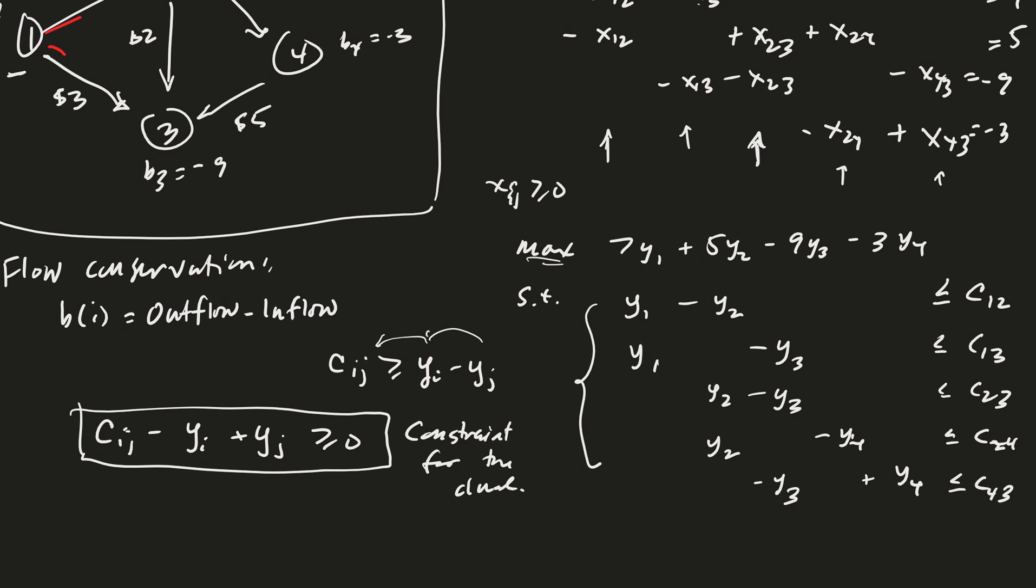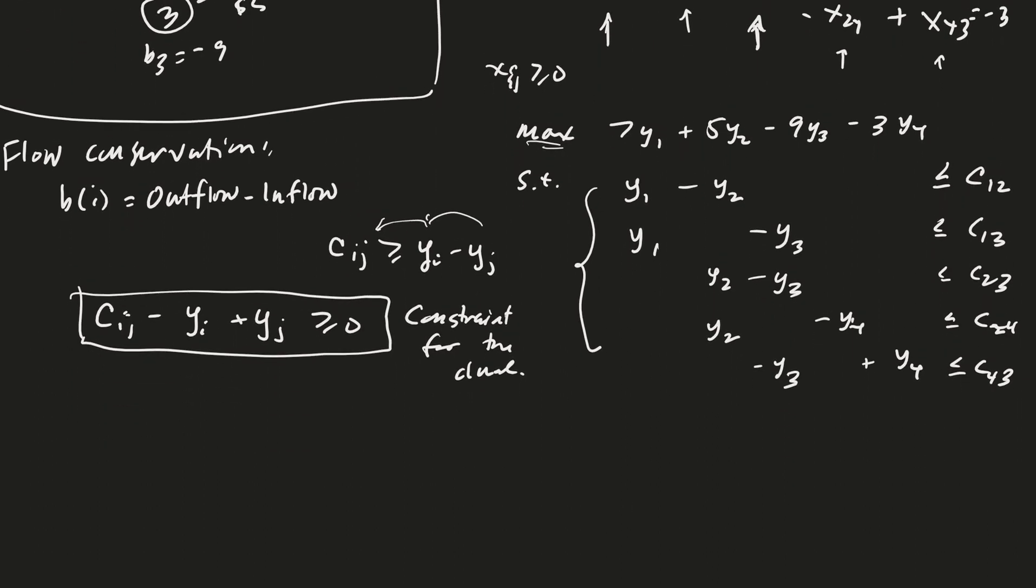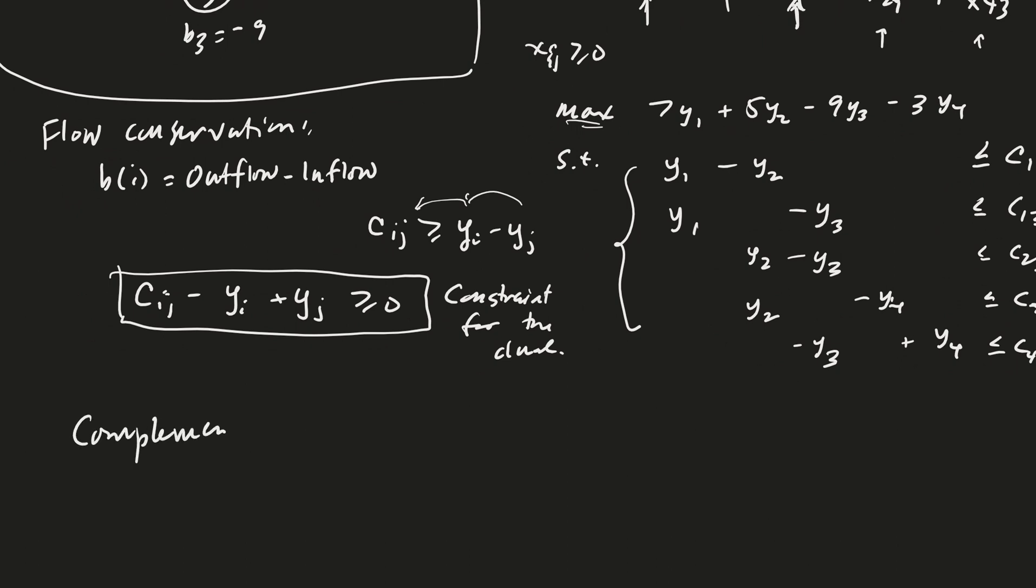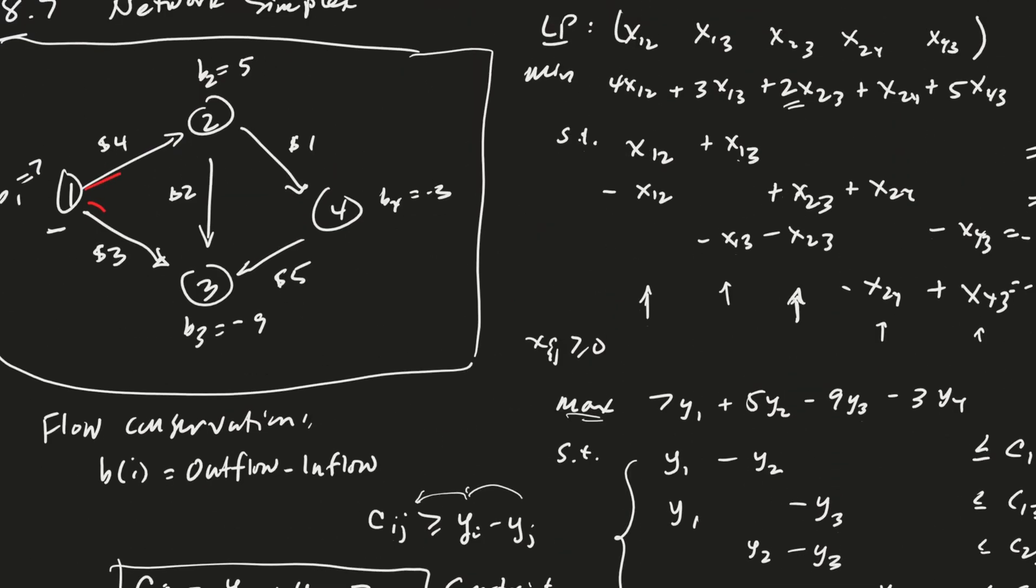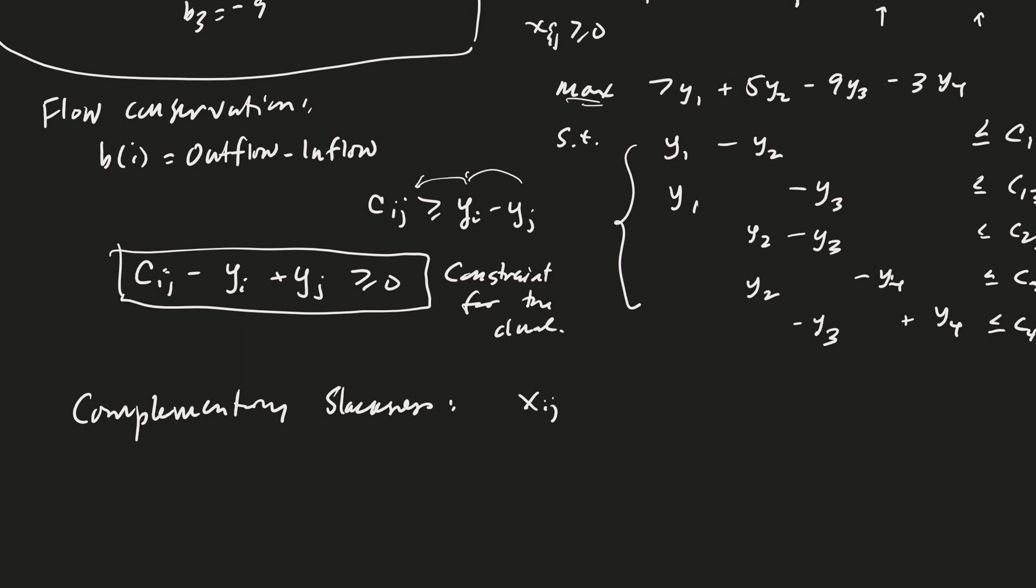Another computation we're going to make comes from complementary slackness. We know that xij from the primal, which is a minimization problem, times our slack variables is going to be zero. This is the slack from the maximization problem. So if xij is a basic variable, then sij must equal zero.